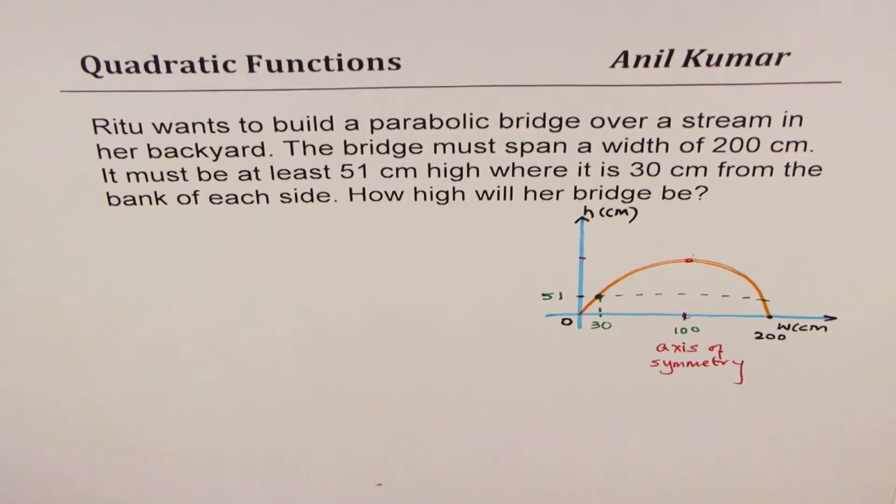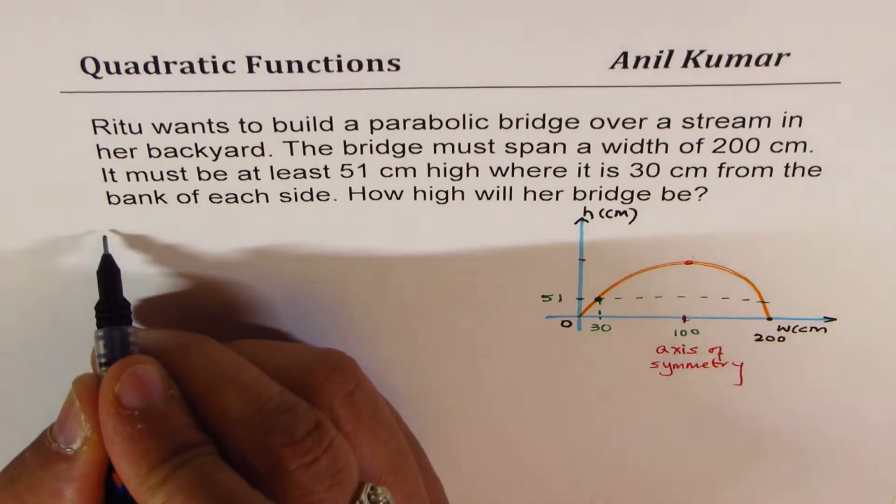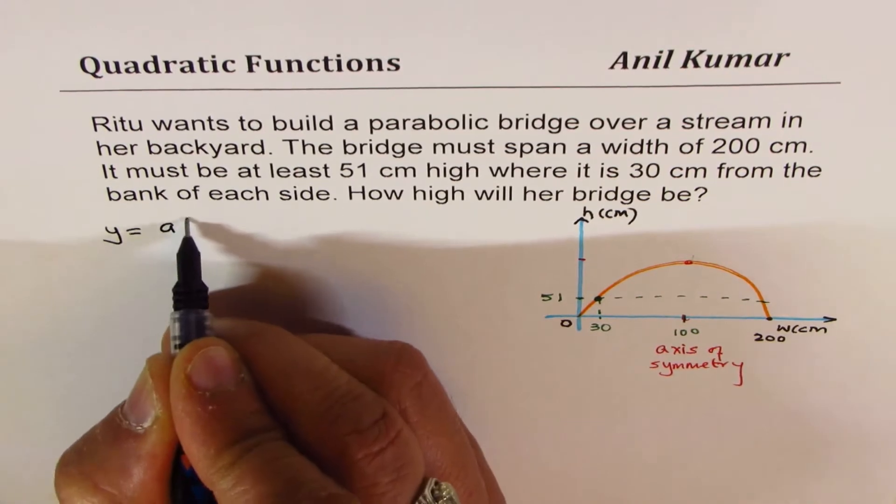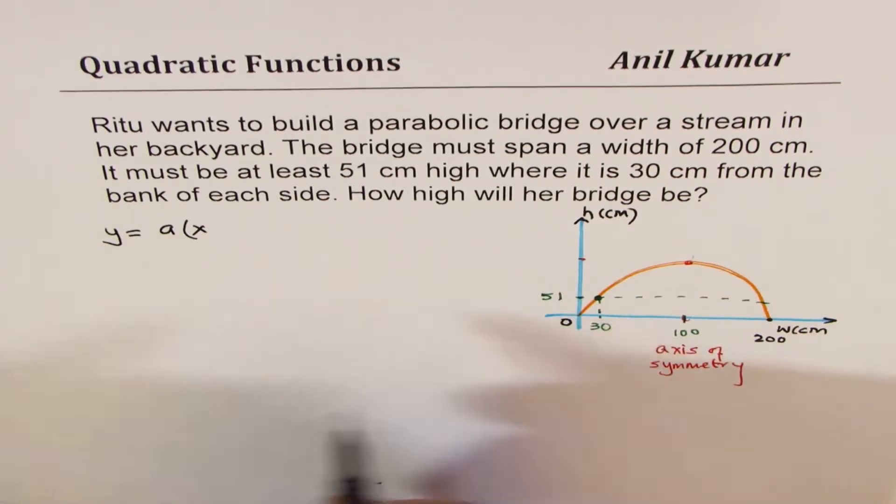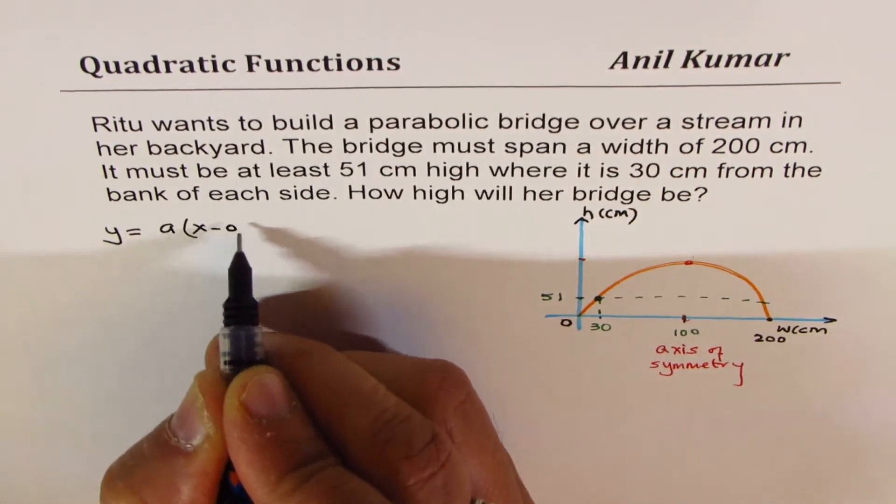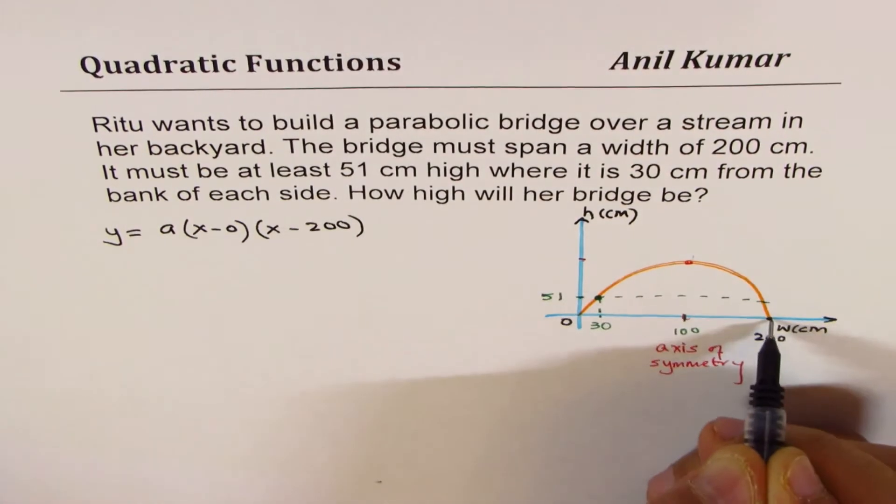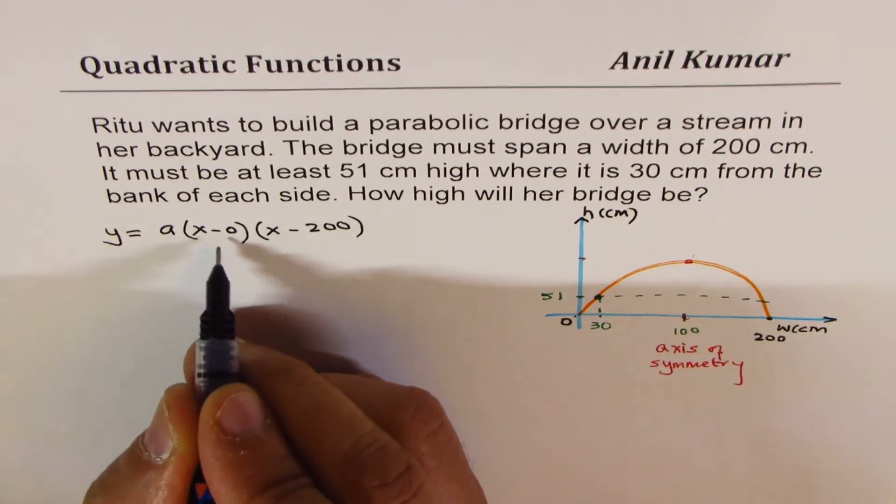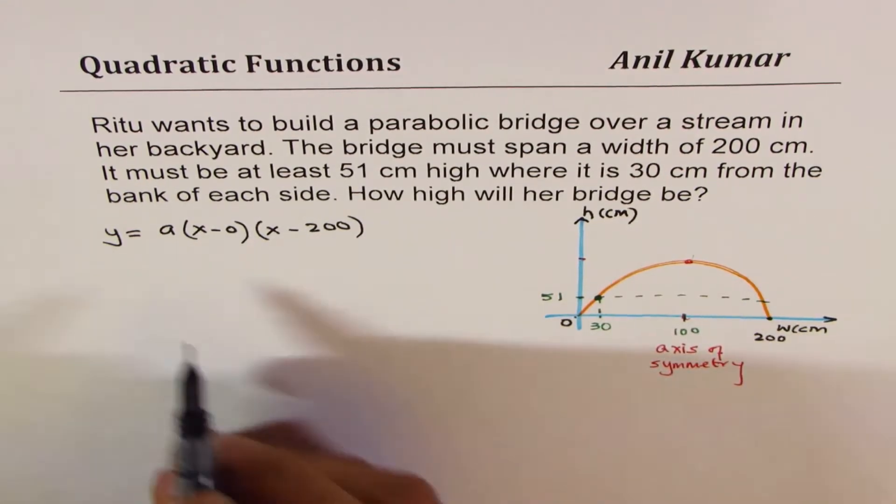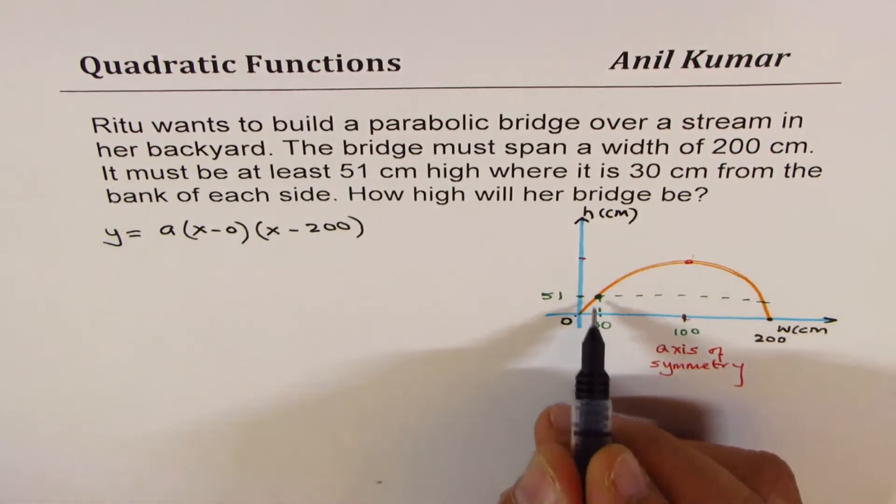Now model this situation and write down your equation. It should be y equals to a times x, since that is the first zero, times x minus 200, the second zero. So these two zeros, x minus zero times x minus 200.